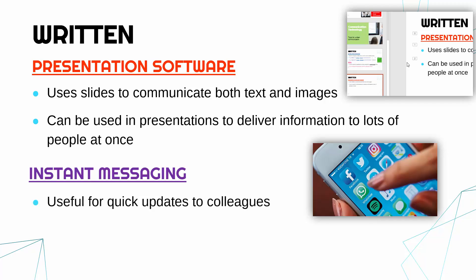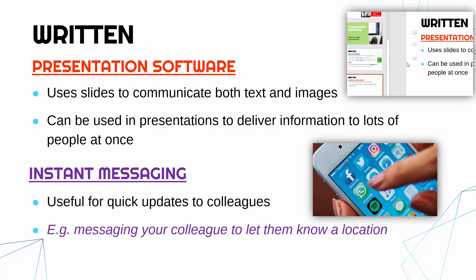Instant messaging is really good in a workplace for quick updates to colleagues. You might not have most colleagues' numbers — only friends or people you work really closely with. But if you want to say something really quickly, you might use WhatsApp or iMessage. For example, you might message a colleague about the location of a meeting, where your client is, or where to find something. Sending an email for that would maybe be a little overkill, and obviously sending a letter or report would be ridiculous.